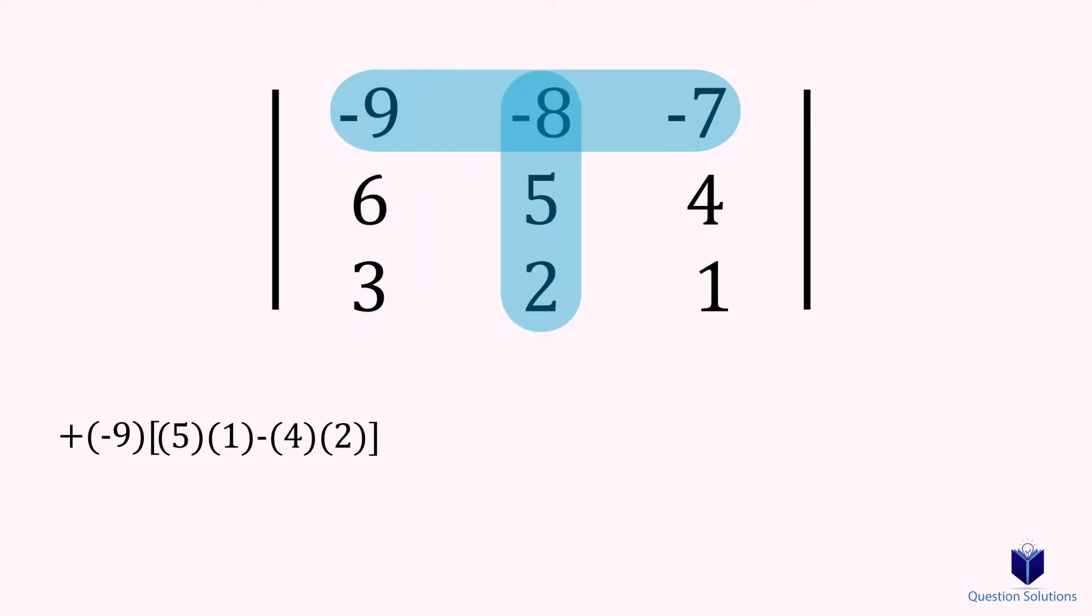Now we cover the next column, and the sign switches to negative. As before, we cross multiply and subtract. Moving on to the next column, sign switches to positive, and we do the same as before.